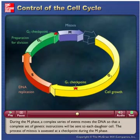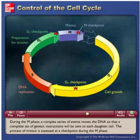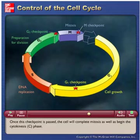During the M phase, a complex series of events moves the DNA so that a complete set of genetic instructions will be sent to each daughter cell. The process of mitosis is assessed at a checkpoint during the M phase. Once this checkpoint is passed, the cell will complete mitosis as well as begin the cytokinesis C phase.